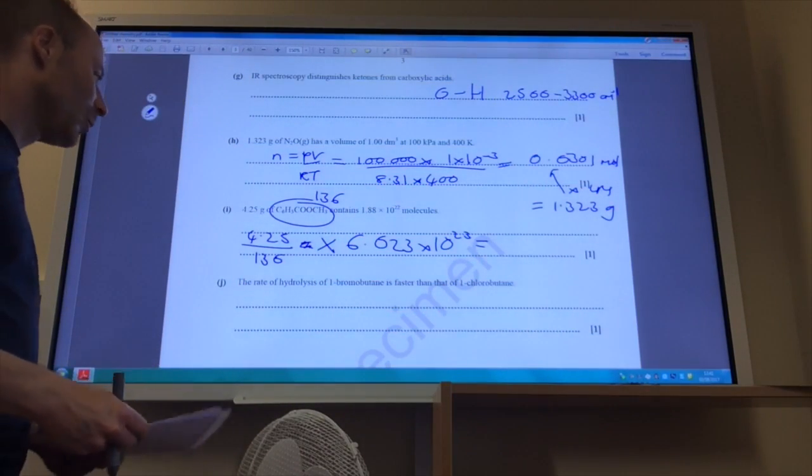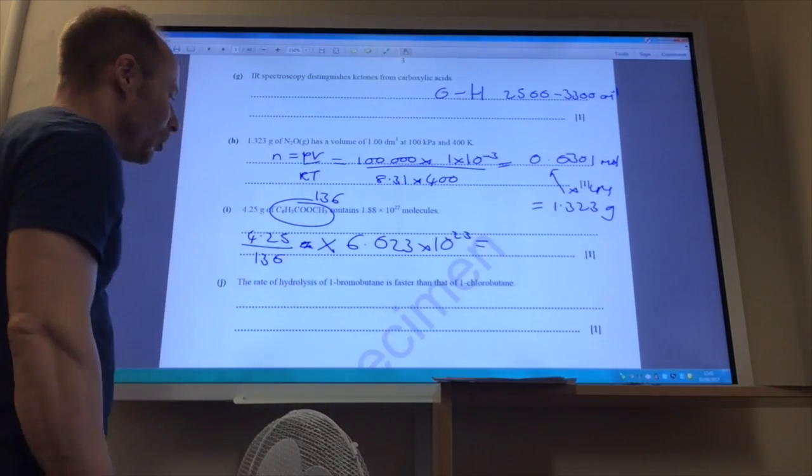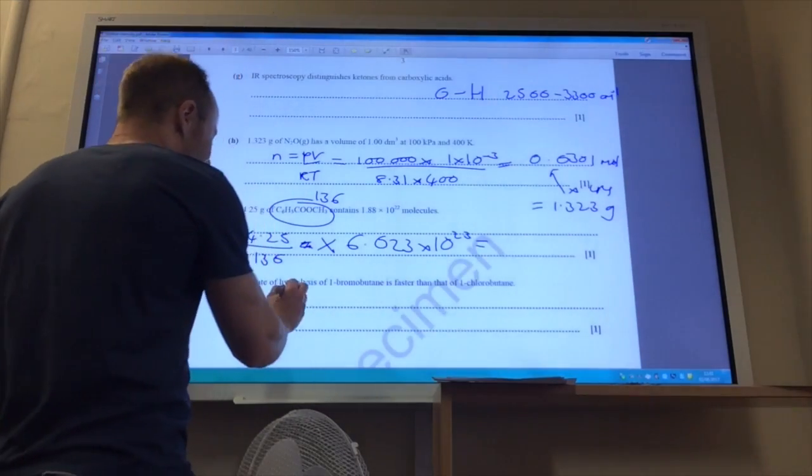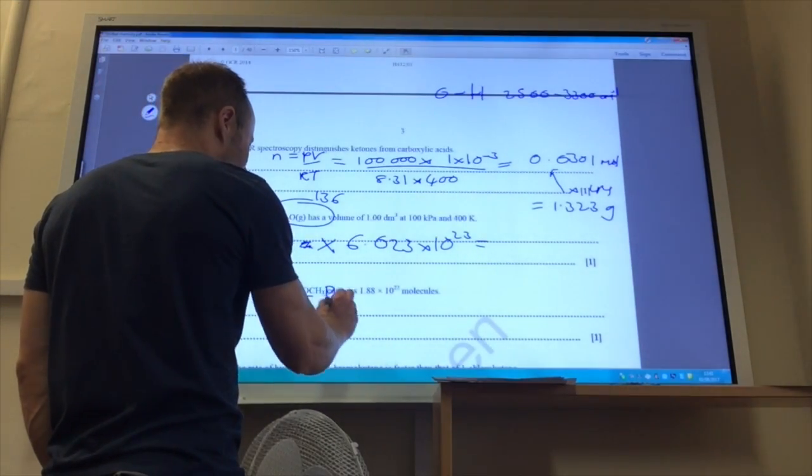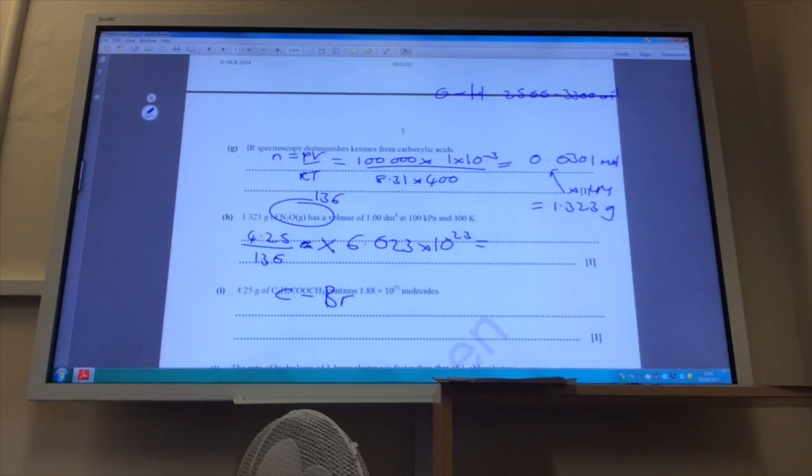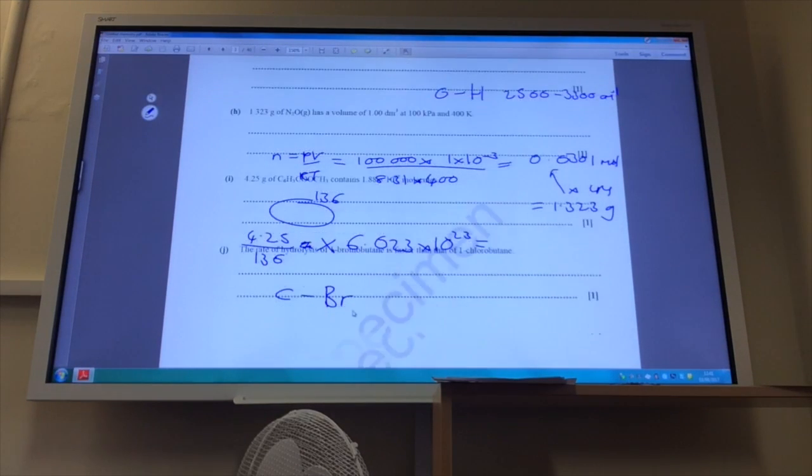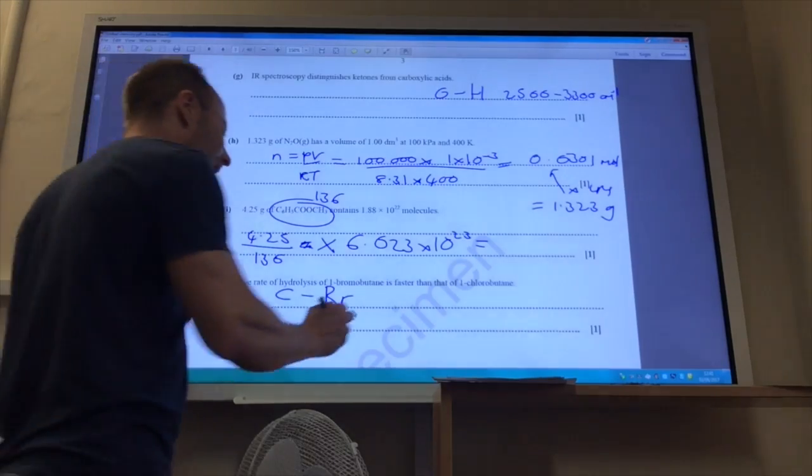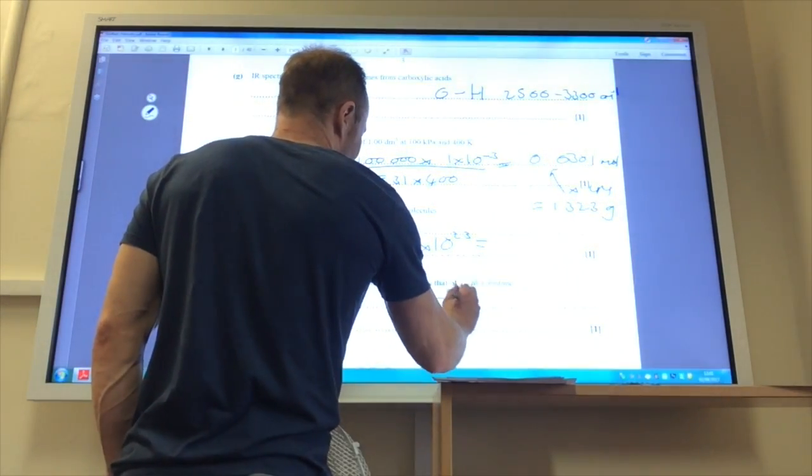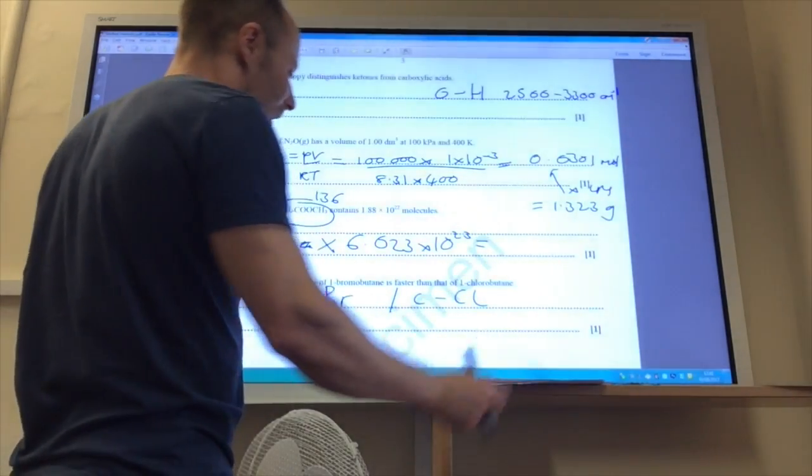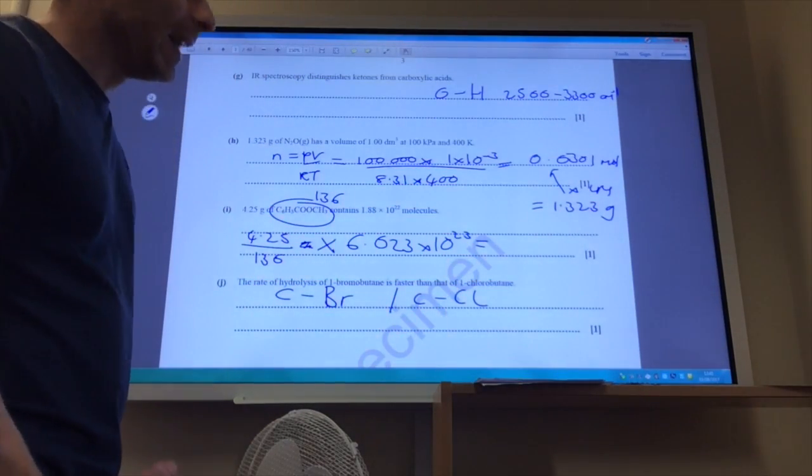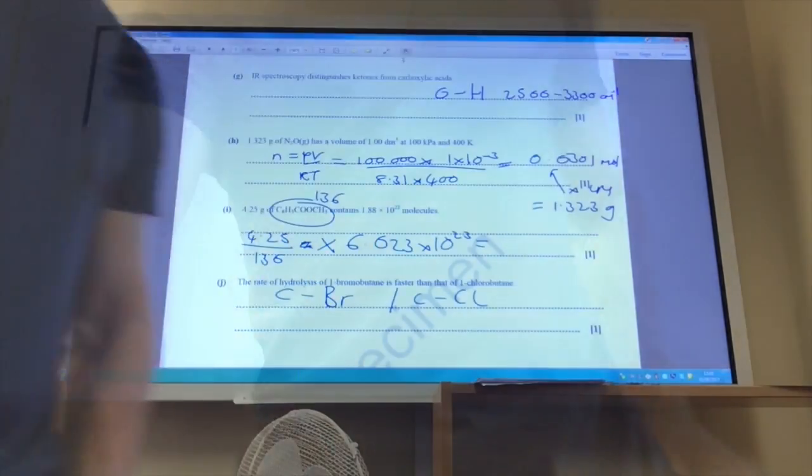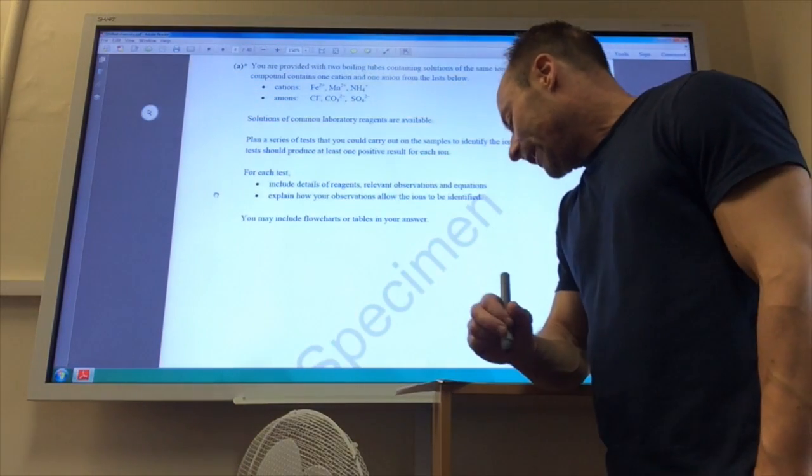The rate of hydrolysis of 1-bromobutane is faster than 1-chlorobutane. That's because the carbon-bromine bond, which is the one that gets broken, is longer and much weaker than the carbon-chlorine bond.